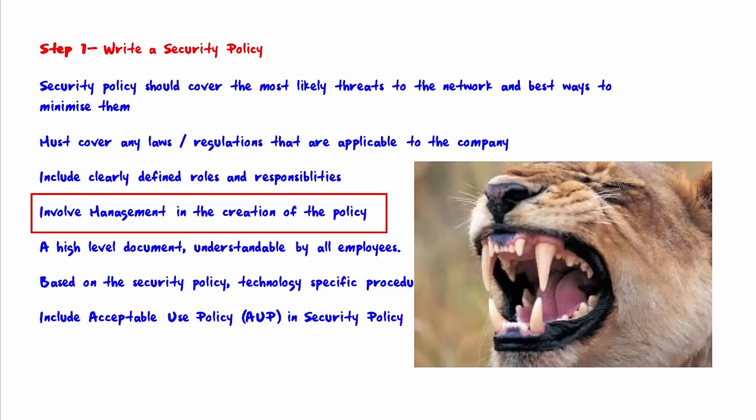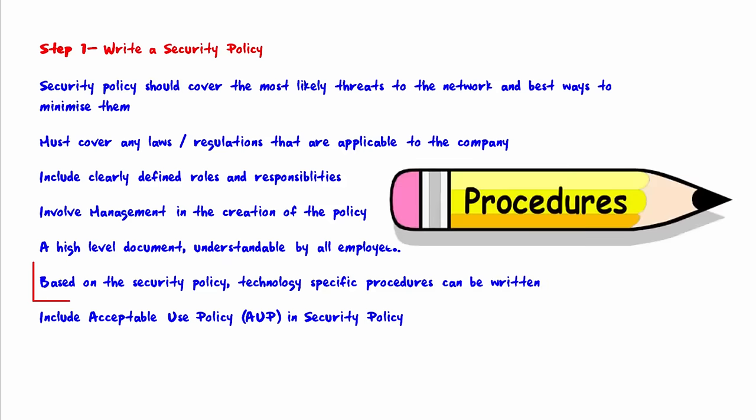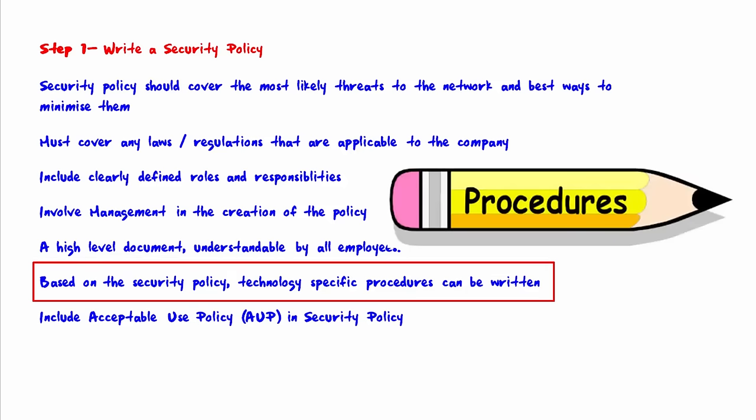You want to make sure that your security policy is a high-level document, understandable by all employees. It should be broad as opposed to technology-specific. Writing the policy in this manner has the benefit that the security policy should rarely require updating. Based on the security policy, technology-specific procedures can be written. It's assumed that as time goes on, procedures will need to be rewritten, but the security policy should not.